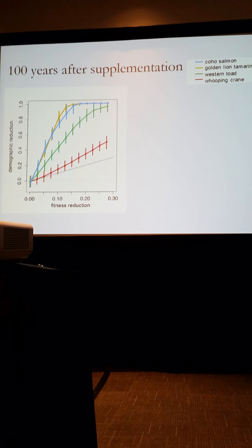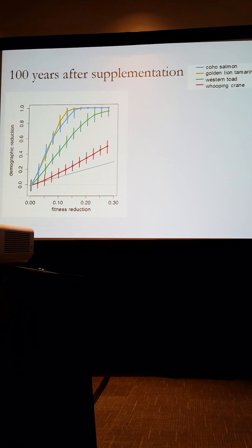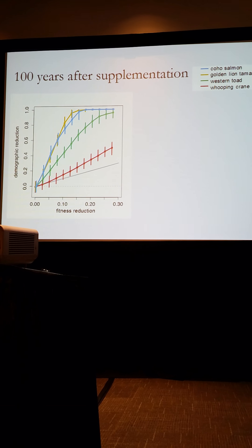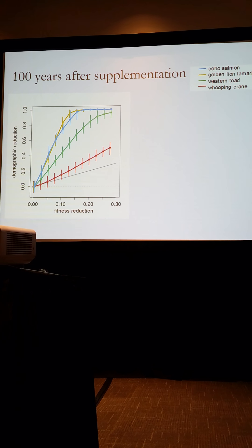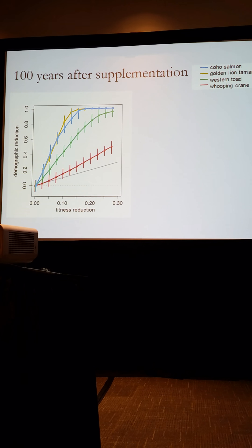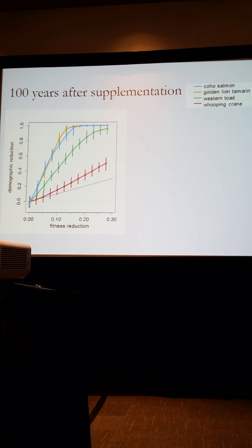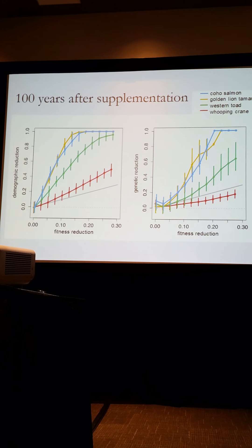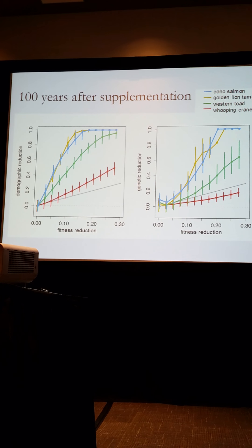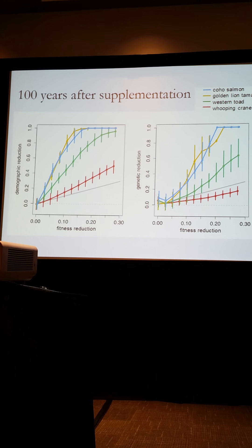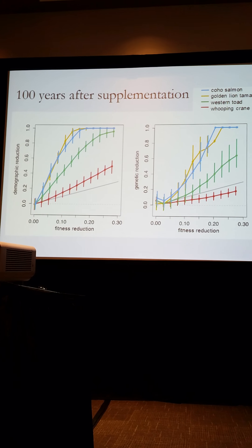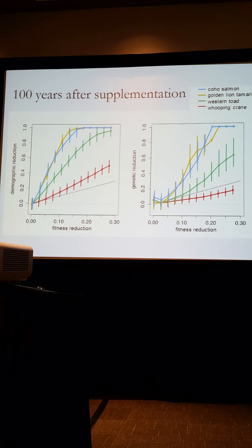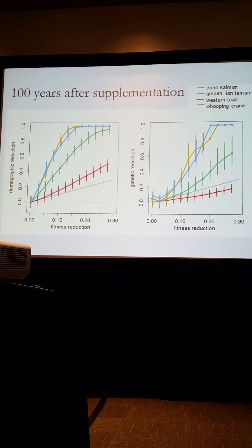Looking 100 years after supplementation ended and considering the effects of adaptation to captivity modeled as a direct fitness cost, we found a disproportionately high demographic reduction resulting from these fitness reductions. For example, a 10% reduction in western toad led to a 40% decrease in population size — a result of individuals with captive ancestry entering our captive breeding program and pulling fitness down year after year. When we also considered genetic diversity 100 years after supplementation, both population size and neutral genetic diversity effects scaled with the lifespan of the species. Longer-lived species like the whooping crane showed a diminished effect relative to shorter-lived species like coho salmon and golden lion tamarin.